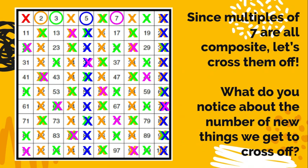As you're crossing them off, think about this question. What do you notice about the number of new things we get to cross off? Meaning, the number of numbers you crossed off that had not been crossed off before? This time I noticed the only ones that were brand new were like 77 and 91. That's not very many.